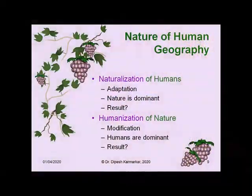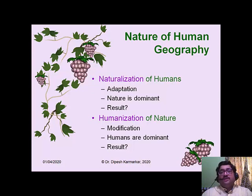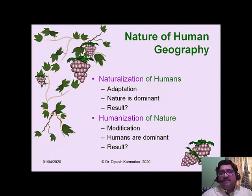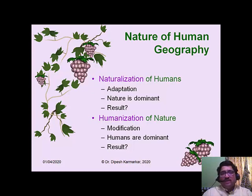Humans change the natural setting to suit the needs and requirements of human life. The result is good from a human point of view — they get their needs, comforts, and luxuries. But because it involves modifying nature, it will not lead to an eco-friendly lifestyle. And if the lifestyle is not eco-friendly, it will lead to a number of environmental problems. So these are two ways human geography looks at the human-environment relationship: one where nature is dominant and one where humans are dominant.